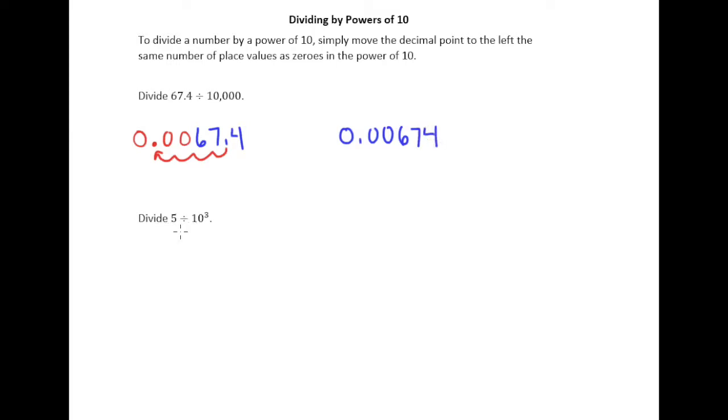Alright, 5 divided by 10 to the third. Remember 10 to the third is just 1 followed by 3 zeros. So whatever that power is, that's the number of zeros you have in your power of 10. So you take your 5, and understand when it's a whole number the decimal point is just hiding right after the 5. And you're going to send it back three places. So 1, 2, 3. So there were two empty spots there, decimal point, and then a zero in front of that decimal point. So our answer there is 0.005.